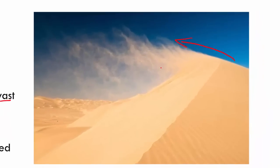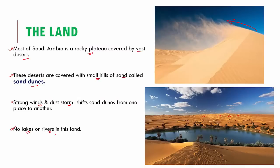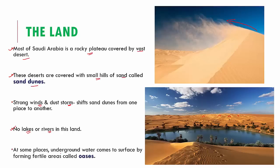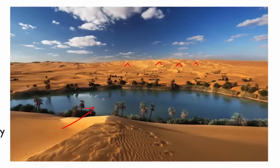Strong winds carry sand from one hill and deposit it to form another. Because there is no vegetation to hold the sand in place, strong winds are able to carry it from one place to another. There are also no lakes or rivers in this land. However, at some places, underground water sources come up to the surface, forming a fertile area called an oasis. The sand around the oasis becomes fertile, which allows plants to grow there.